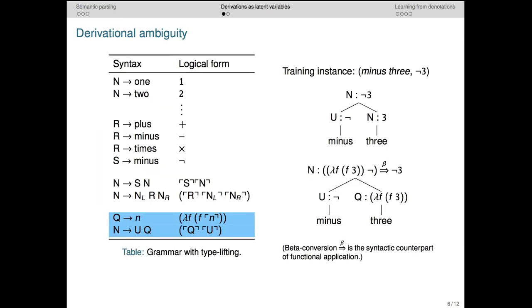In the simple grammar we've been working with, there is not any derivational ambiguity in that we assume that the inputs are syntactic structures and each one of them has exactly one logical form and final denotation.